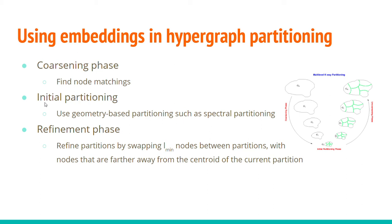Once we find these embeddings, we use this extra information to enhance different phases of hypergraph partitioning. In the coarsening phase, we use embeddings to find node matchings and merge nodes that are more similar. In the initial partitioning phase, we use the embedding for geometry-based partitioning such as spectral partitioning. Finally, in the refinement phase, we use the embeddings to swap nodes between partitions, prioritizing nodes that are further away from the centroid of their partition compared to other partitions.